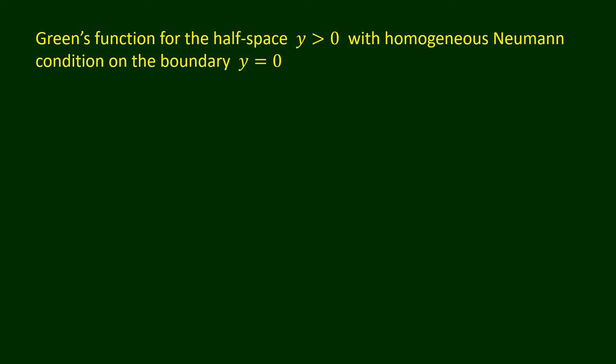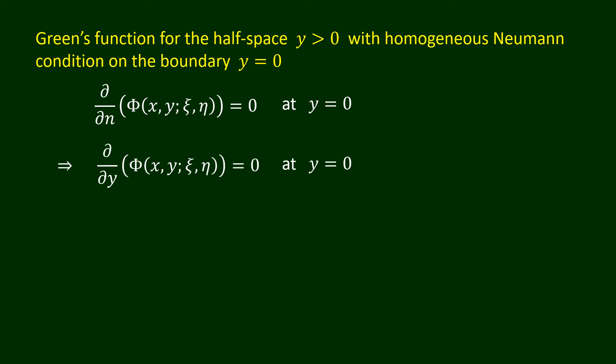A Green's function for the half space y strictly greater than 0, with the homogeneous Neumann condition on the boundary y equals 0, may be constructed in a similar manner as the Green's function for the Dirichlet condition. The homogeneous Neumann condition requires the normal derivative of capital Phi to be 0 at y equals 0. The x and y components of the unit outward normal vector to the half space on the boundary y equals 0 are given by 0 and minus 1, respectively. Hence, the homogeneous Neumann condition can be written as del(capital Phi) over del y equals 0 at y equals 0.